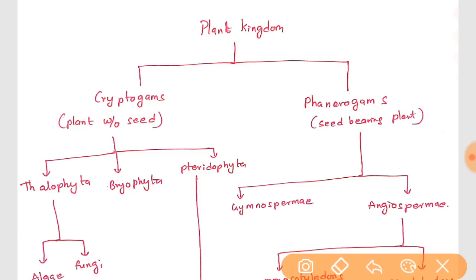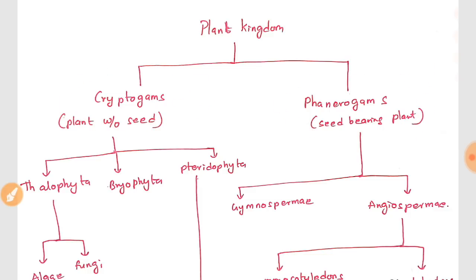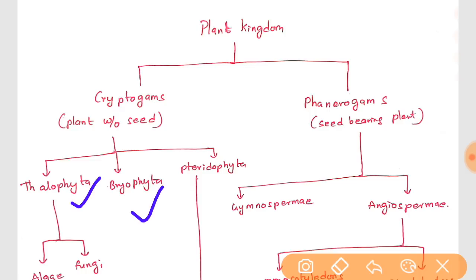The plant kingdom is divided into cryptogamy and phanerogamy. Cryptogamy means plants without seeds, and phanerogamy refers to seed-bearing plants. Cryptogamy doesn't have any seeds; phanerogamy has seeds. Cryptogamy is further divided into three categories: thalophyta, bryophyta, and pteridophyta, whereas phanerogamy is divided into gymnosperms and angiosperms.